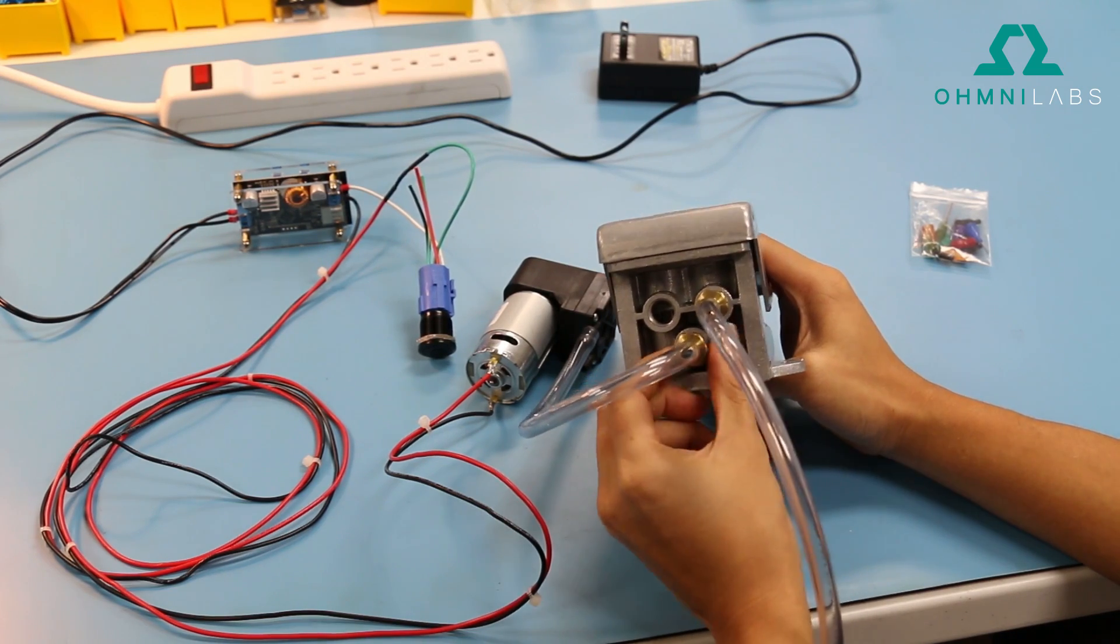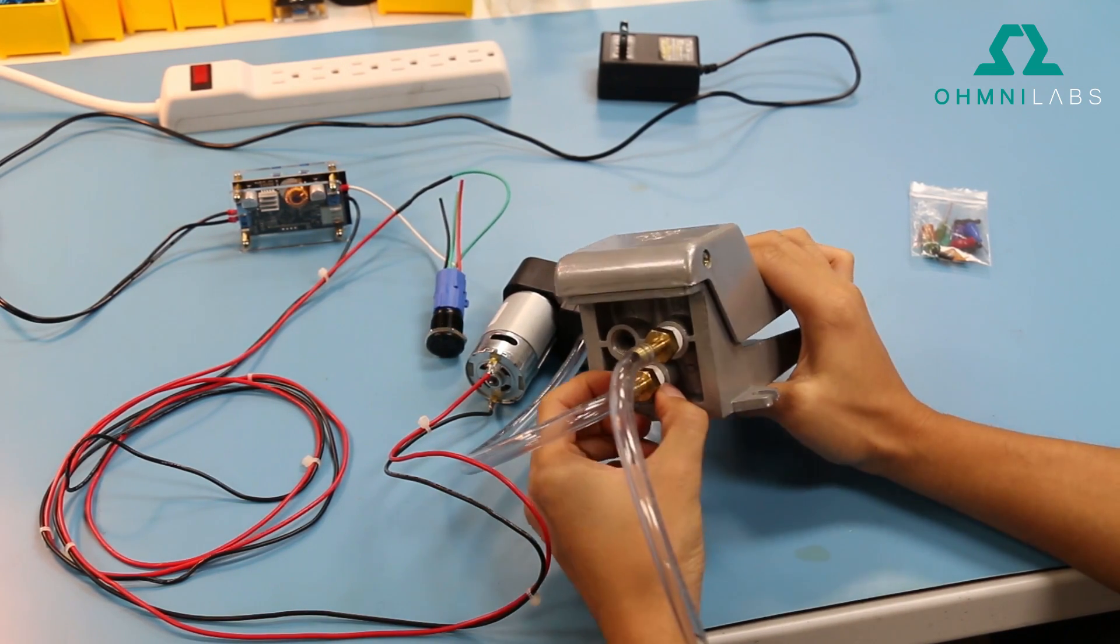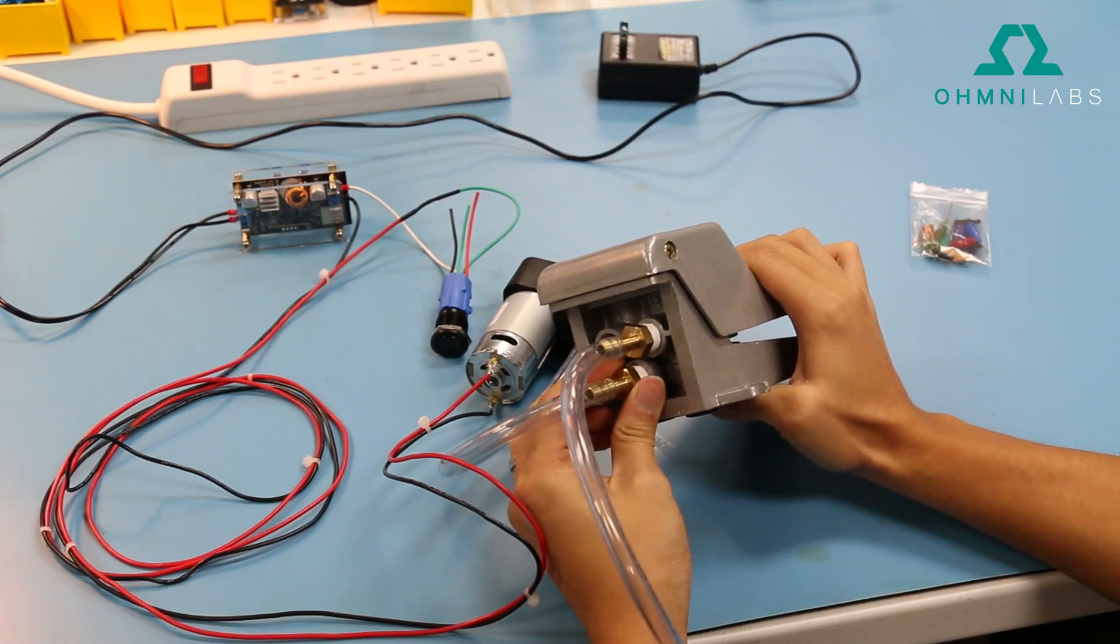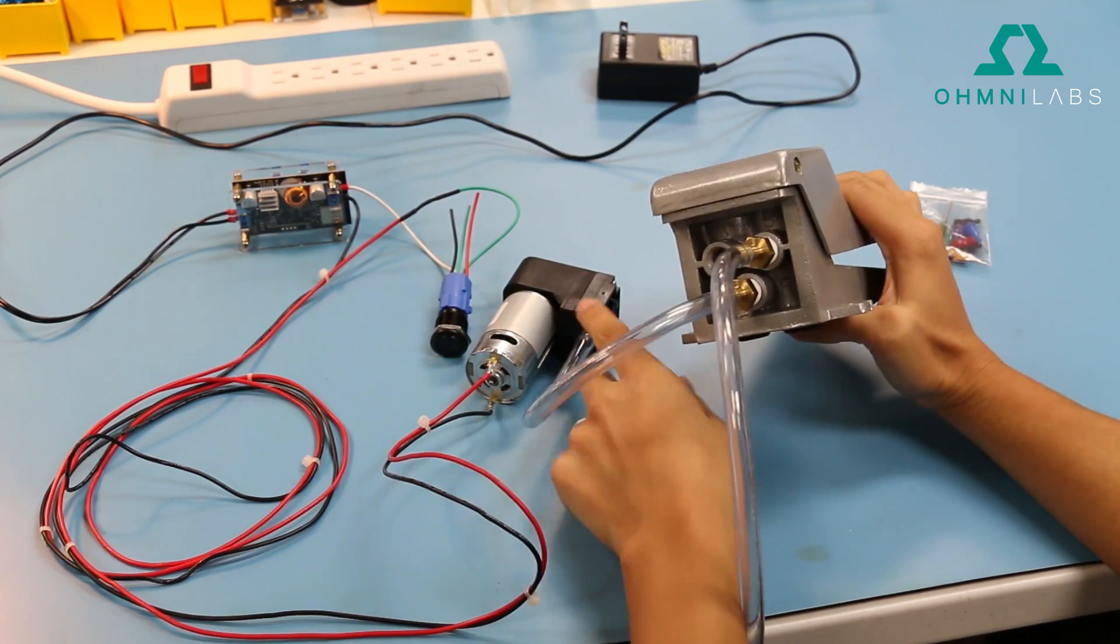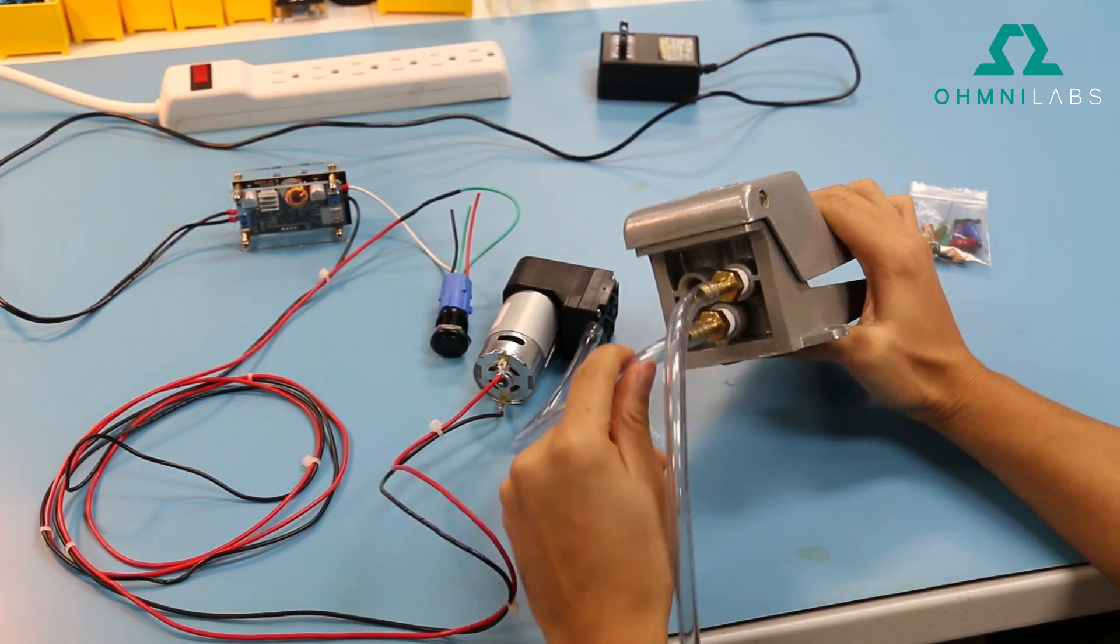We have these brass flange inserts and we use teflon tape to create a good seal. And so one of them goes to the motor. I'll explain that in a bit.